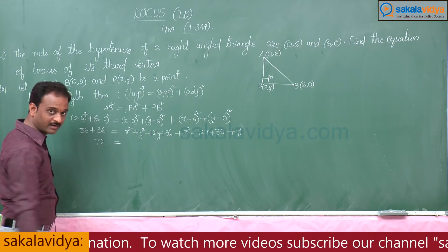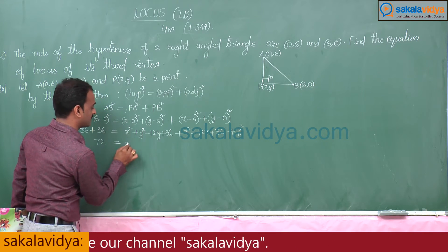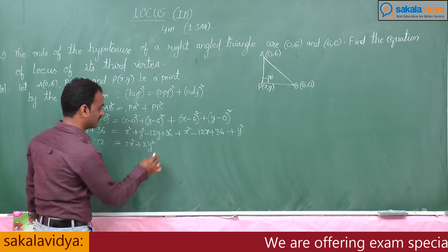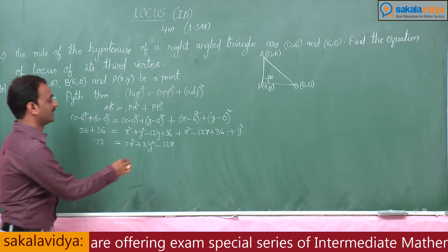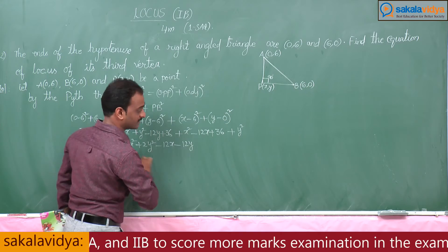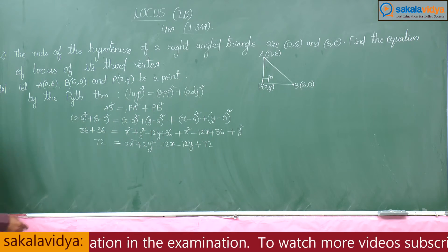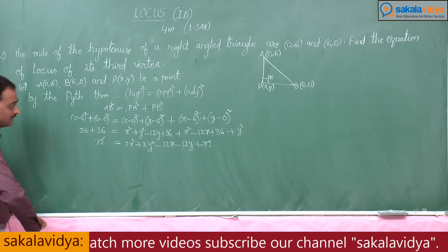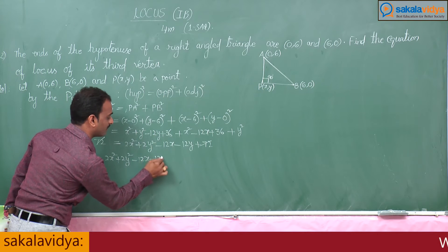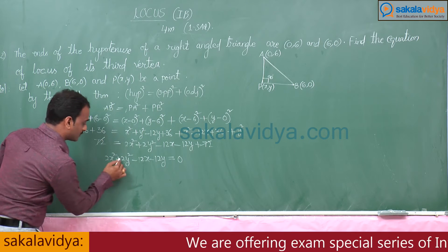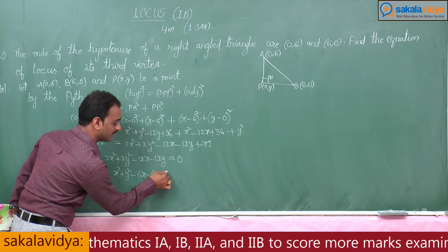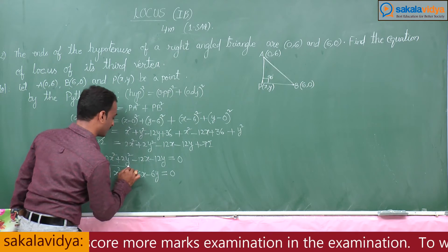So 72 = x² + y² − 12y + 36 + x² − 12x + 36 + y². Simplifying: 72 = 2x² + 2y² − 12x − 12y + 72. The 72 cancels on both sides, giving 2x² + 2y² − 12x − 12y = 0. Taking 2 common: x² + y² − 6x − 6y = 0, which is the required equation.